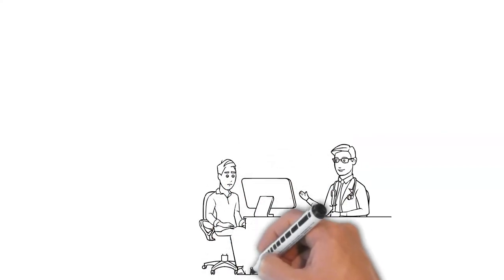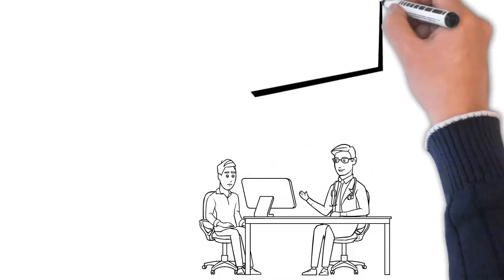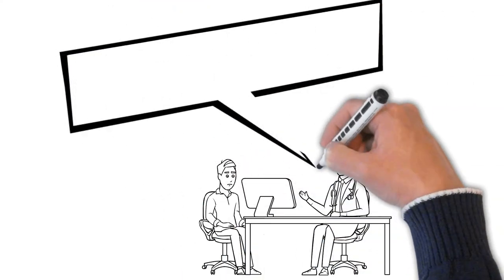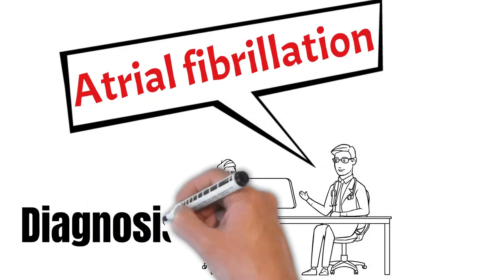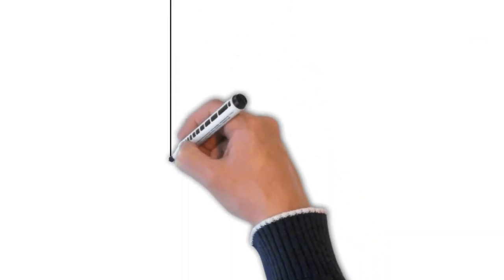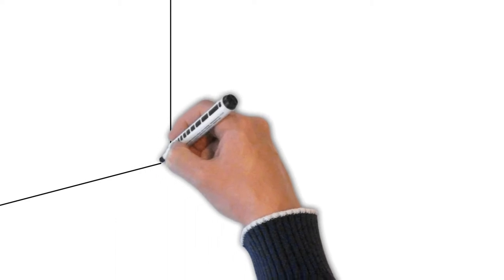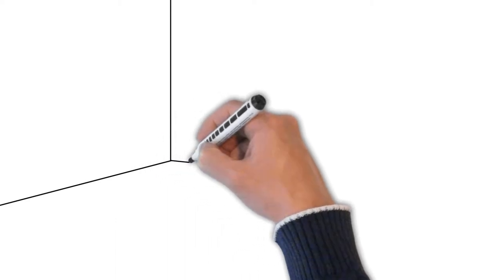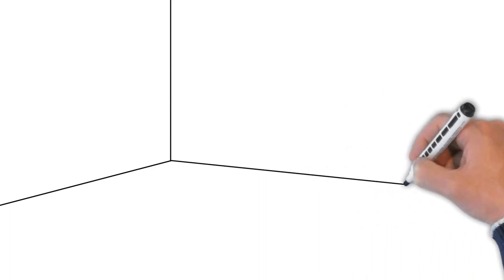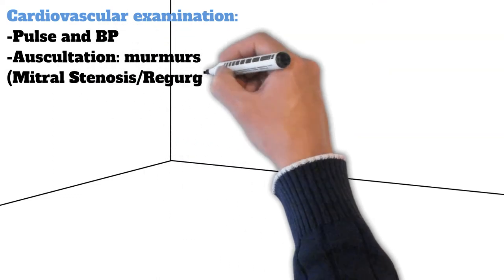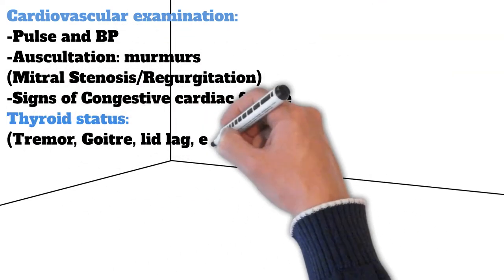At this point, we have ruled out possible differentials and aligned our approach towards a definitive diagnosis. To support it, we can perform a quick physical examination and lab investigations. In this case, we can perform a cardiovascular examination including pulse and BP, auscultation, murmurs of mitral stenosis or mitral regurgitation, and signs of congestive cardiac failure.